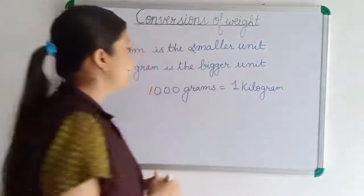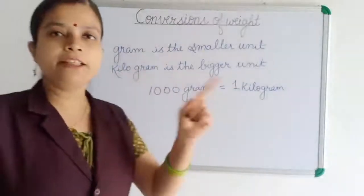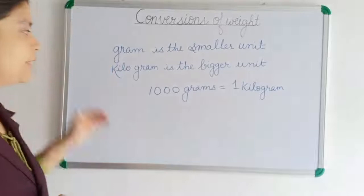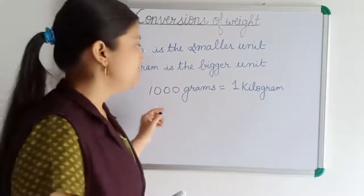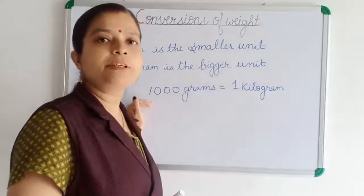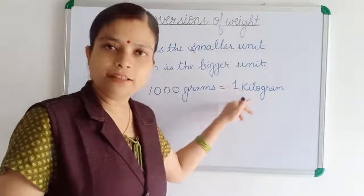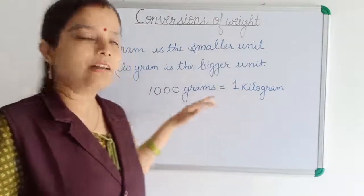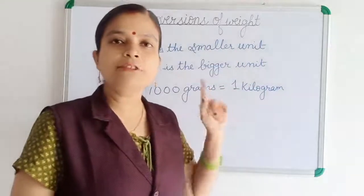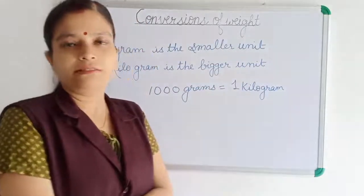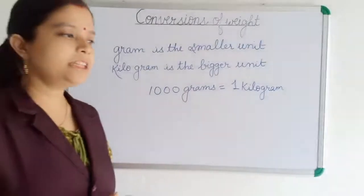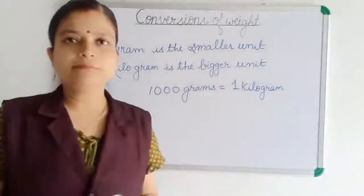When a thousand grams makes one kilogram, you have to keep this in your mind. So whenever you have to convert kilogram into gram, you have to multiply by a thousand. And when you have to convert gram into kilogram, you have to divide by a thousand. These things you have to keep in your mind. Now let's start some conversions.